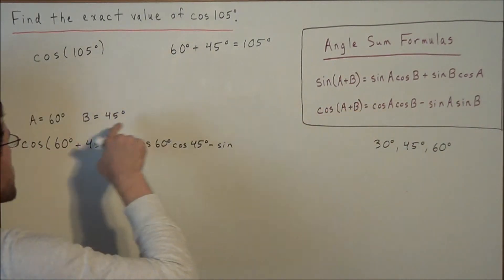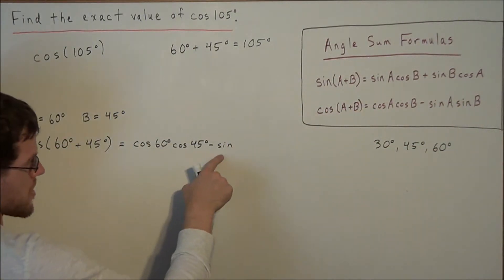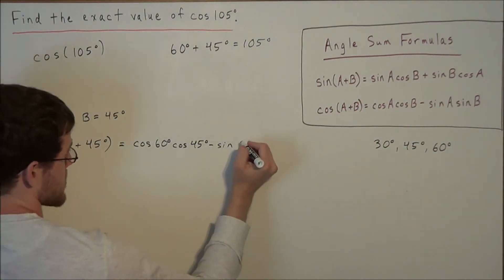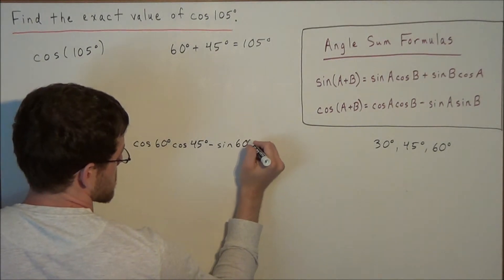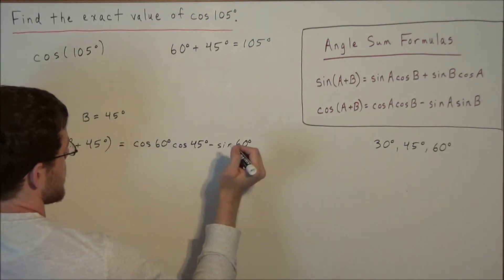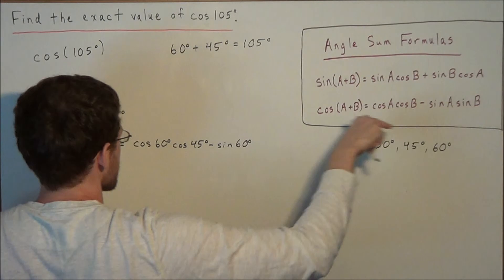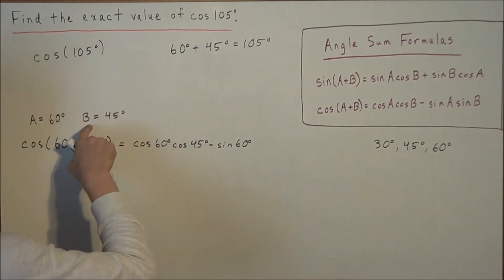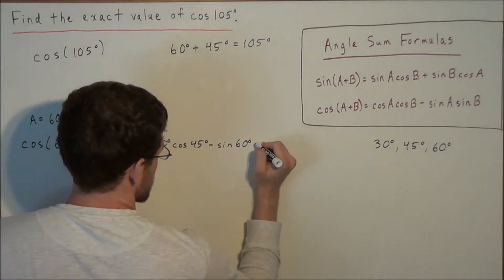So we have sine of A, but our A value is 60 degrees, so we're taking the sine of 60 degrees. And we're multiplying this by sine of B — sine of 45 degrees.